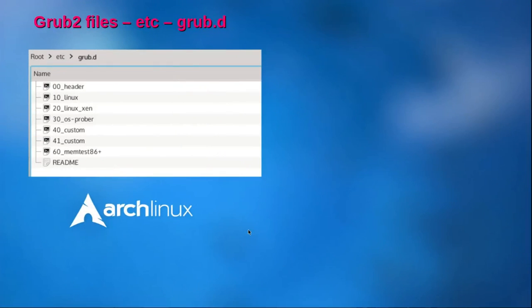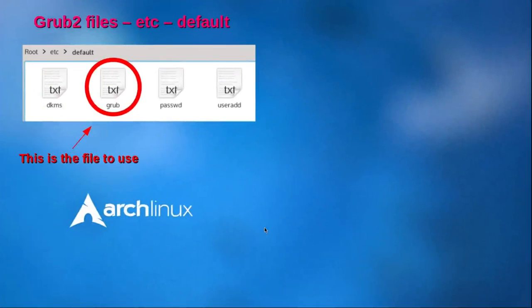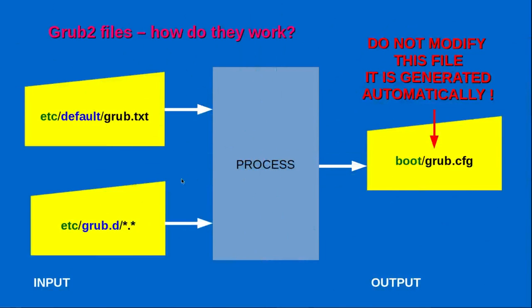In the grub.d folder, we find several files. These files are used to build up the Grub menu that will appear on the Grub screen. In the folder default, we find the grub file. This will be the file to use to create a nice Grub screen. The input files are the grub file and the files contained in the grub.d folder. The output file is the grub.cfg file — this file is generated automatically. Please do not modify this file. After working on the input files, you will need to trigger the system in order to update the output file.